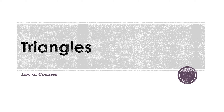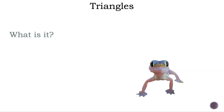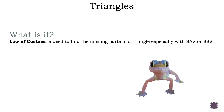Triangles — how to use the law of cosines. The law of cosines is used to find the missing parts of a triangle, especially with SAS (side-angle-side) or SSS (side-side-side).